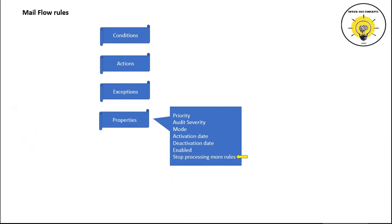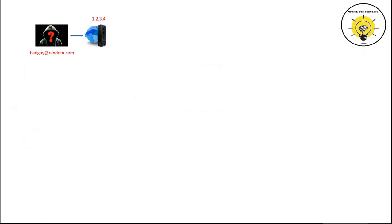Let's understand how we can create a mail flow rule using conditions, actions, and exceptions. Assume that a user not belonging to your organization is sending spam emails to your users. The sender's email address is badguy@random.com and his email server's IP address is 1.2.3.4. As an administrator, we want to block this sender. As an end user, we can add this sender to the block list of junk settings, but those settings take effect only when the email reaches the user's mailbox. With mail flow rules, we can stop the email before it even reaches the organization.